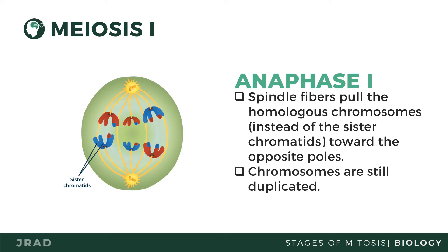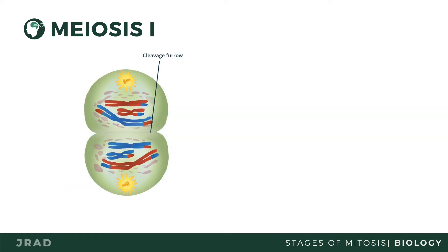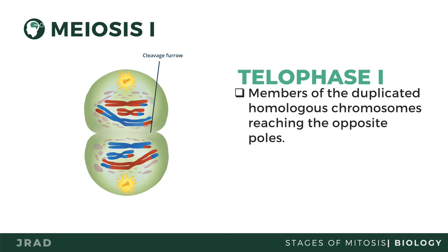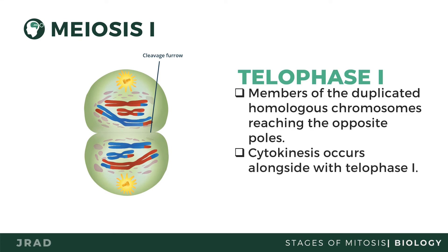Upon reaching the end of the poles, each will have a haploid set of chromosomes. During telophase 1, cytokinesis occurs simultaneously. After cytokinesis, two daughter haploid cells are produced, since the number of chromosomes is halved from parent to daughter cells. This is why meiosis 1 is also referred to as the reductive division.